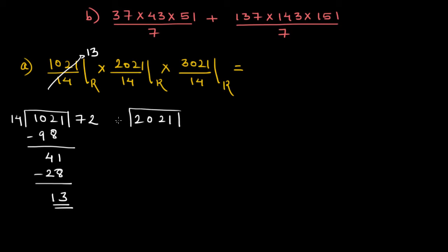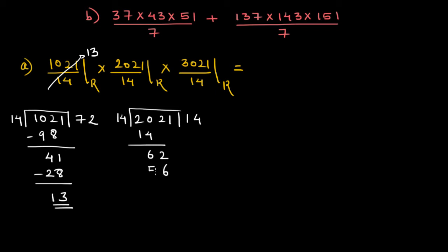Now let me divide 2021 by 14. 14 times 1 is 14, leaving 6 and 2. Trying 14 times 4: 4 times 4 is 16, carry 1, so 56. This leaves 61, and 14 times 4 is 56, so I have 5 as my remainder. So 2021 divided by 14 gives remainder 5.